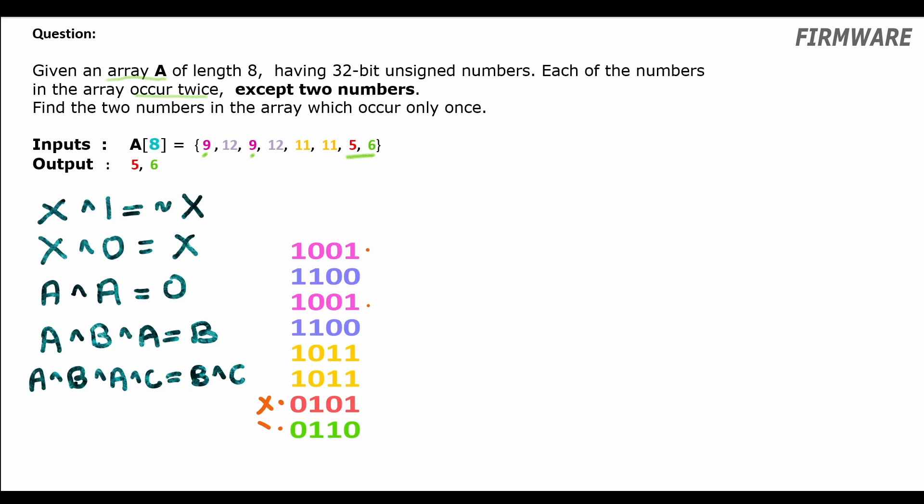When we do XOR of the numbers which occur twice, say 9 XOR 9, it will result in 0. 12 XOR 12 is 0. 11 XOR 11 is 0. But what is 5 XOR 6? 5 XOR 6 will result in the number 3. Therefore if we do the XOR of all this we will have 0 XOR 0 XOR 0 XOR 3 equal to 3 which is 0 0 1 1.